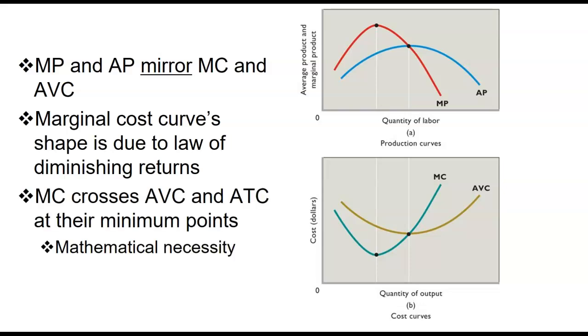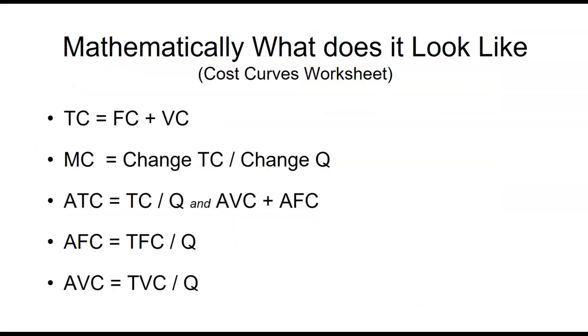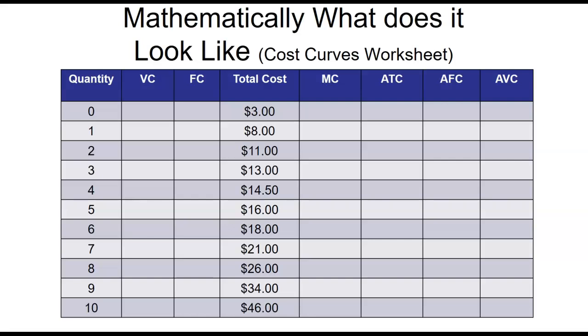Mathematically, the marginal cost crosses the AVC and the ATC at their minimum points. We'll discuss that later, but that's going to be a reality of this. So again, we have all these equations going on. So if you didn't have them, make sure you get them down, but you might be given something along these lines. So you're given the whole table and you're to fill it out. So what do you do? Well, here's the question.